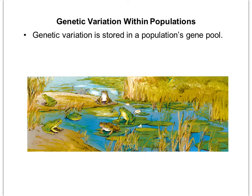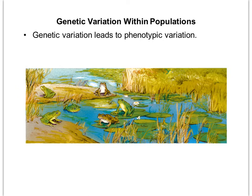Genetic variation is super important both for evolution and for survival, and it gets stored in a population's gene pool. Variation in DNA leads to overall phenotypic variation — for example, both brown frogs and green frogs. Genetic variation is beneficial because it increases the likelihood that some individuals will survive a changing environment. If a drought dried up a pond and it became a dirt patch, brown frogs would more likely survive while green frogs would be more visible to predators. Genetic variation ensures that at least someone in the population will survive environmental change.